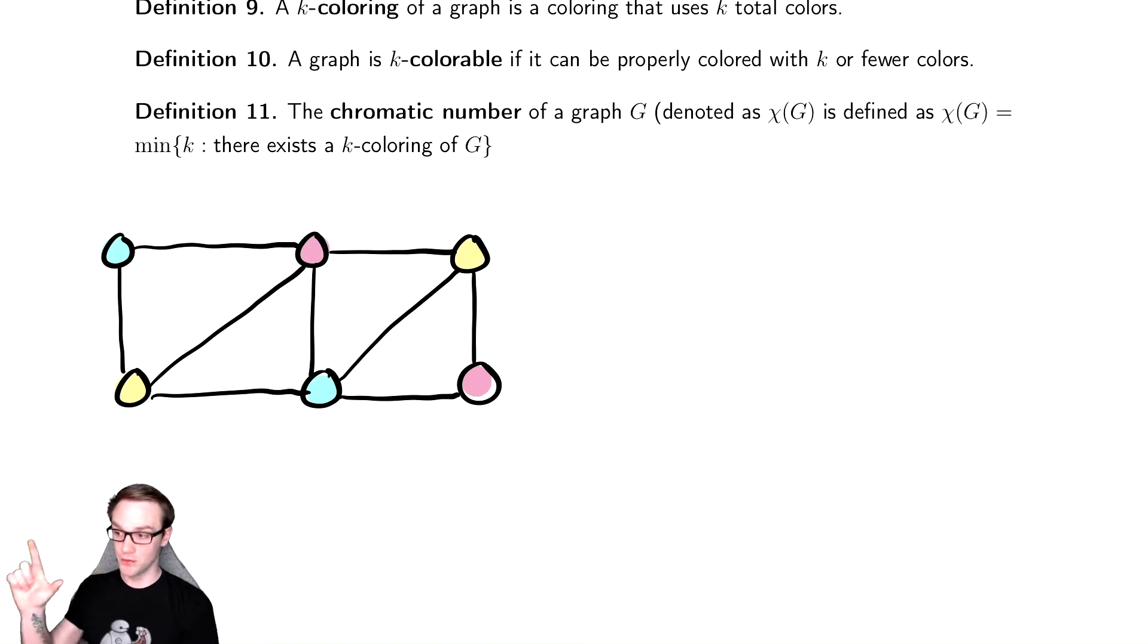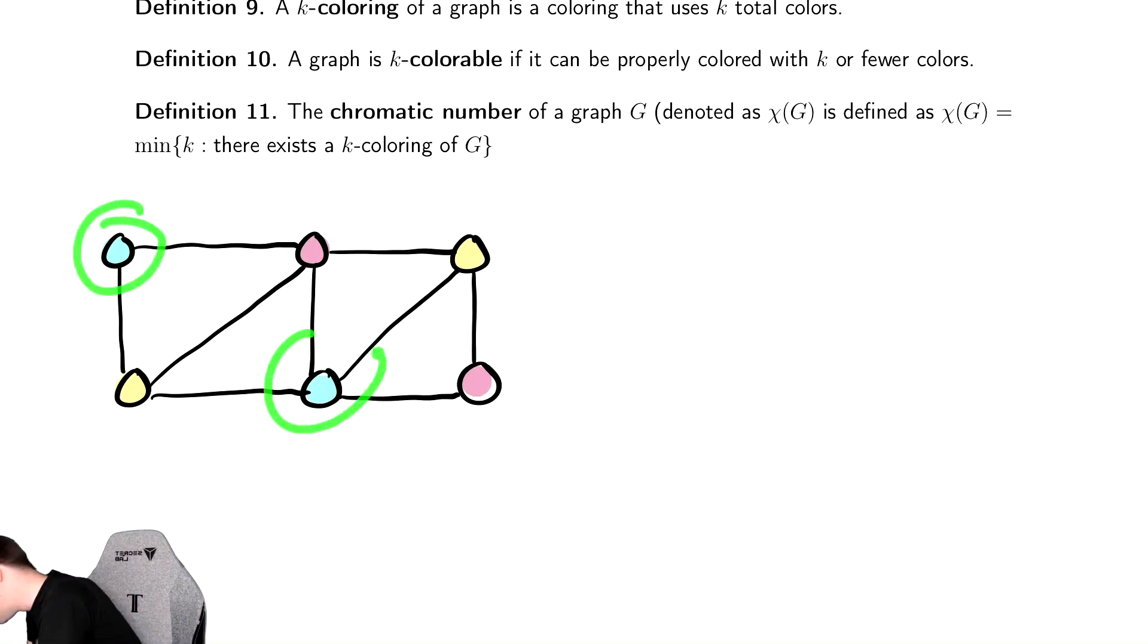I need that there are no blue vertices that are touching, no red vertices that are touching, and no yellow vertices that are touching. The two blue vertices are not touching, the two yellow vertices are not touching, and the two red vertices are not touching. So this is what we call a proper coloring.